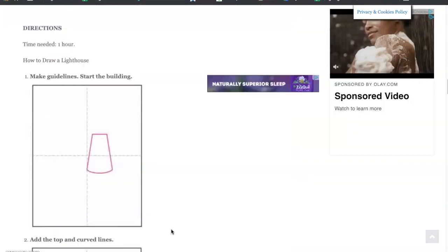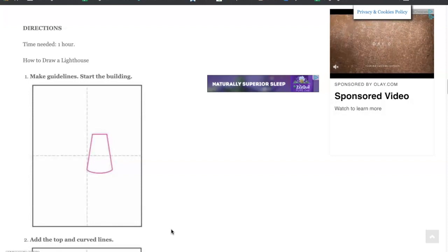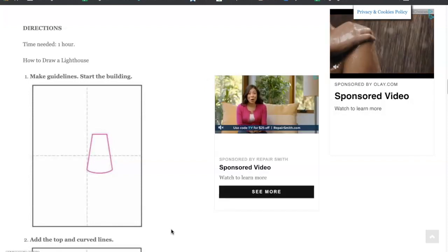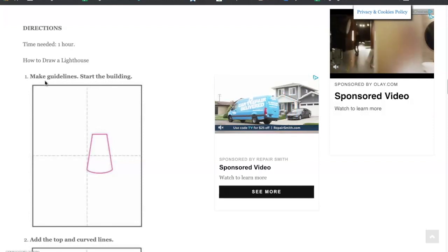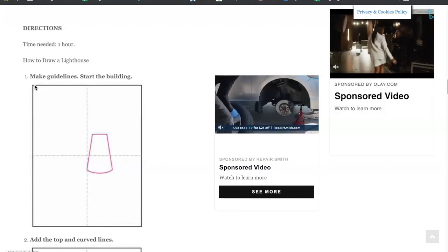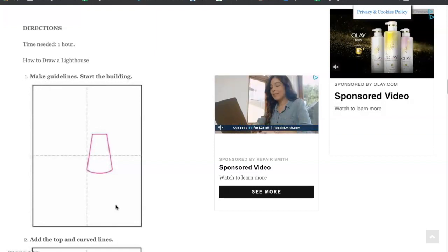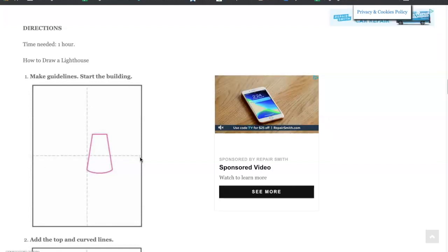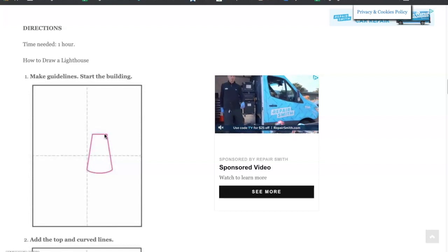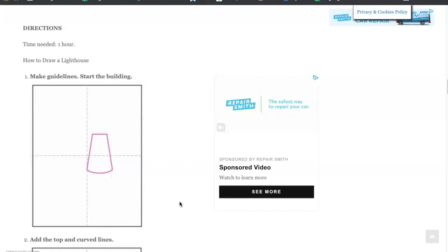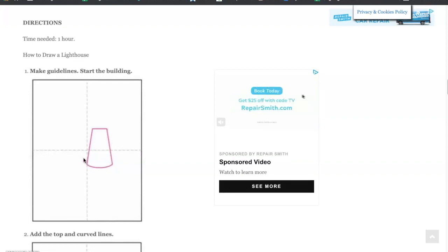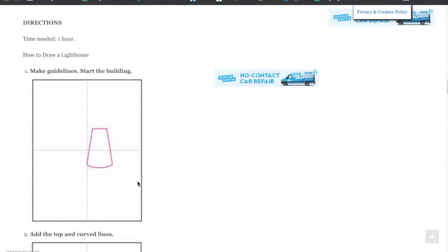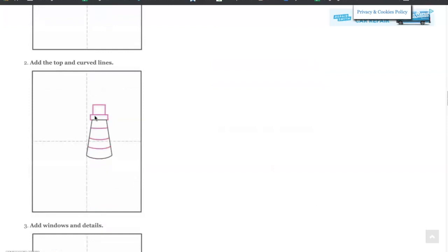So let's draw a lighthouse together. You will need a piece of paper, pencil, a marker, and some coloring markers or crayons or pencils. Step one: we are going to build our lighthouse by using the paper vertically. Fold the paper in fourths to draw your guidelines, then start your building on quadrant two and four. Draw almost a cylinder shape but with a wider base at the bottom.